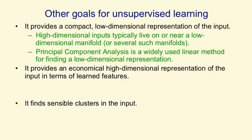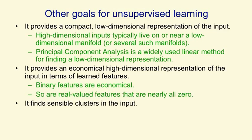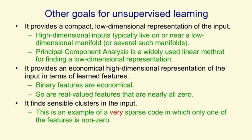Another goal for unsupervised learning is to provide an economical representation for the input in terms of learned features. For example, we can represent the input in terms of binary features, which is economical because it only takes one bit to represent the state of a binary feature. Alternatively, we could use a large number of real-valued features but insist that for each input, almost all of those features are exactly zero — so for each input we only need to represent a few real numbers. Another goal is to find clusters in the input, and clustering could be viewed as a very sparse code: we have one feature per cluster, all features except one are zero, and that one feature has a value of one. So clustering is really just an extreme case of finding sparse features.